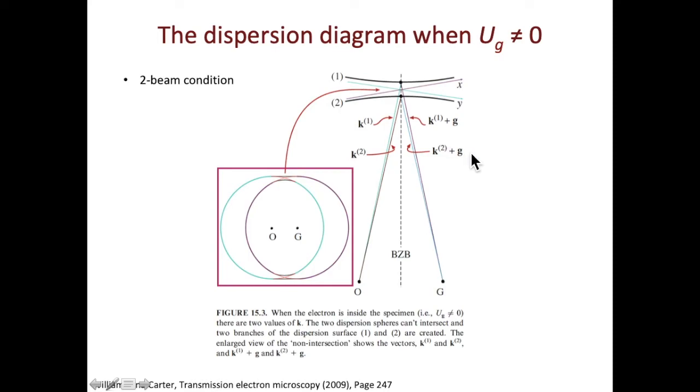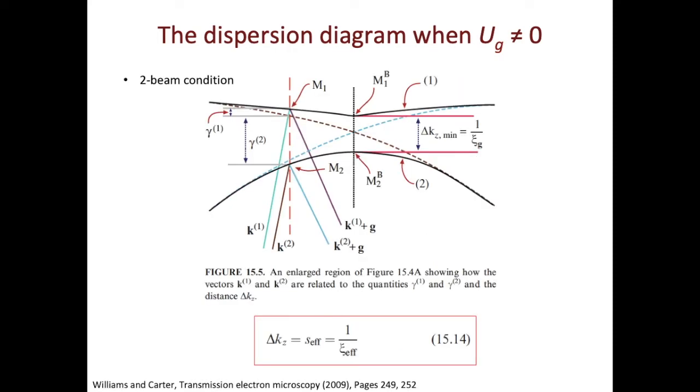Let's have a closer look at this gap. The distance or the energy gap between these two branches is called delta kz. The minimum value for delta kz is at the Brillouin zone boundary, which is equal to 1 over kcg. kc is the extinction distance for the specific g value. Let's recall what we have learned in the dynamical approximation. When the excitation error is equal to zero, the effective excitation error will be equal to 1 over kcg. And this is exactly what is shown here.